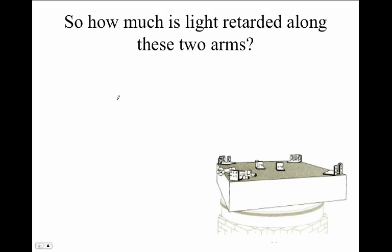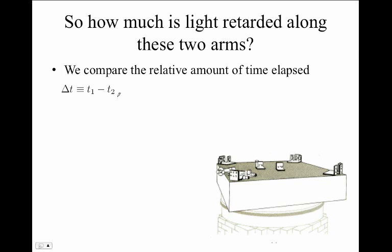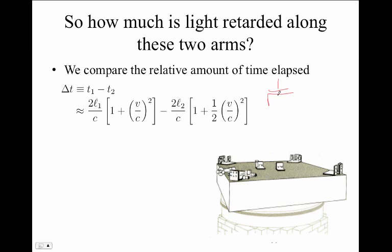So how much is the light retarded between these two arms? We can compare the relative amount of time elapsed and call that delta T. That's the difference in time to propagate between toward mirror M1 and back and mirror M2 and back. This works out to the following formula, again using approximate expansions. And here we use a second expansion that 1 over square root of 1 plus x squared is roughly equal to 1 minus 1 half x squared. This works out to 2L1 minus L2 over C plus 2L1 V squared over C cubed minus L2 V squared over C cubed.